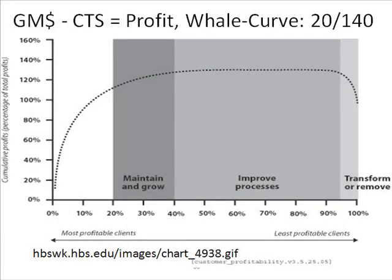In this slide, a picture is hopefully worth a thousand words. This is a graphic representation of a customer profitability ranking report. What a company did was they said, let's build cost-to-serve models so we can figure out what it costs to take care of each customer. Then we know their gross margin dollars, so if we subtract cost-to-serve from that, we'll get a net profit figure for the customer.